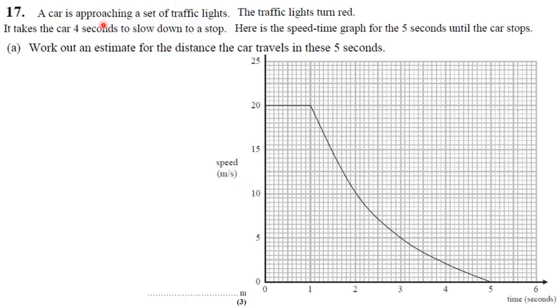This question says a car is approaching a set of traffic lights. The traffic lights turn red. It takes the car 4 seconds to slow down to a stop.